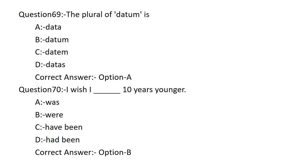The plural form of 'datum' is: Option A: DATA. Option B: DATUM. Option C: DATUM. Option D: DATA. The correct answer is Option A — DATA. The plural form of datum is DATA.